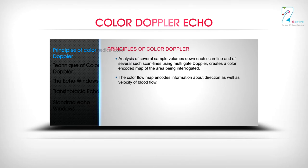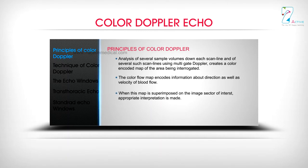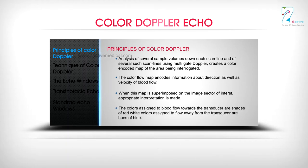The color flow map encodes information about both direction and velocity of blood flow. When this map is superimposed on the image sector of interest, appropriate interpretation is made. The colors assigned to blood flow towards the transducer are shades of red; colors assigned to flow away from the transducer are hues of blue.